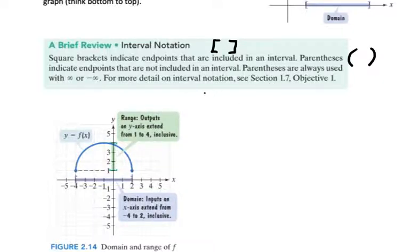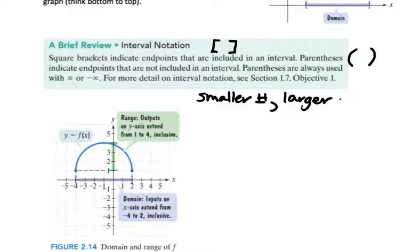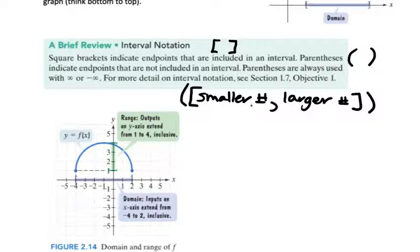The other thing about interval notation is that we always write the smaller number first. So we write the smaller number, comma, the larger number — we separate them with a comma — and then put either square brackets or parentheses around them. The smaller number always comes first. This tells us the range of values that either the domain or the range can take on.